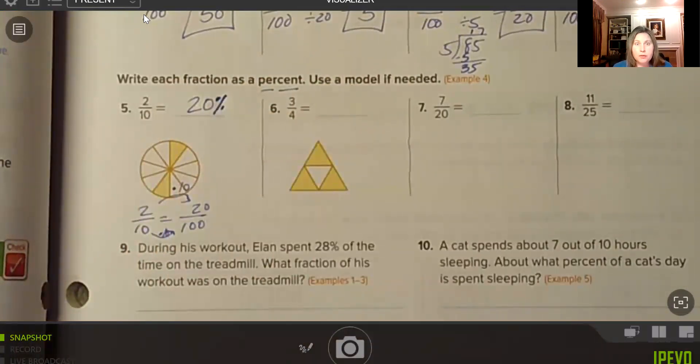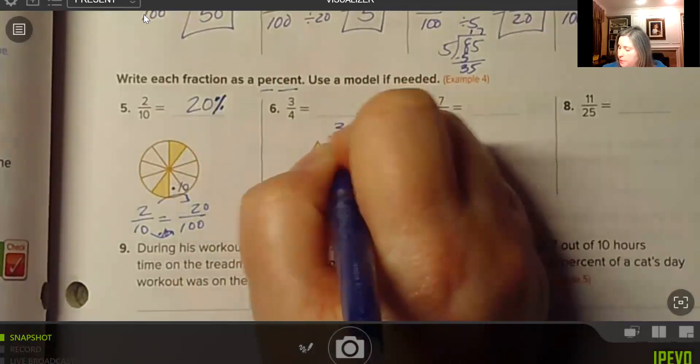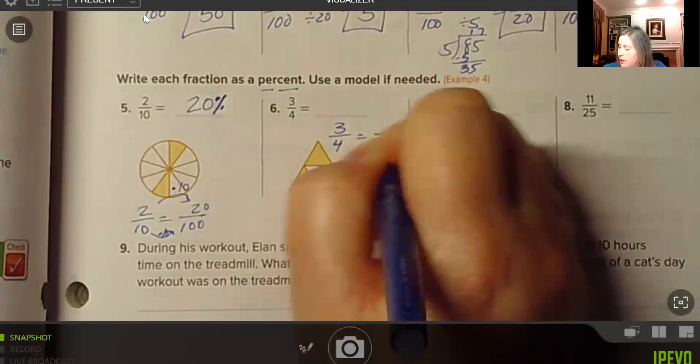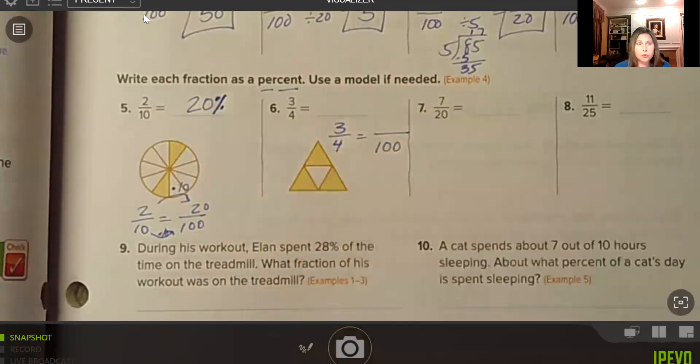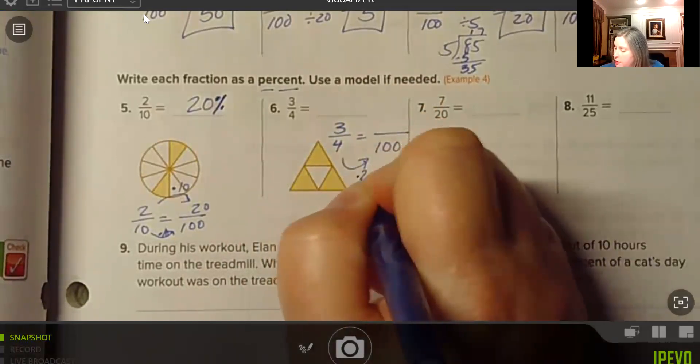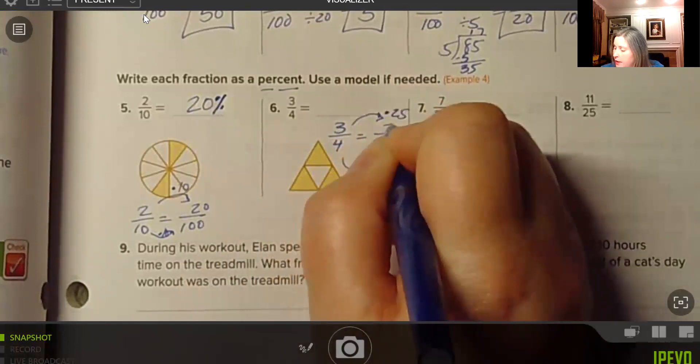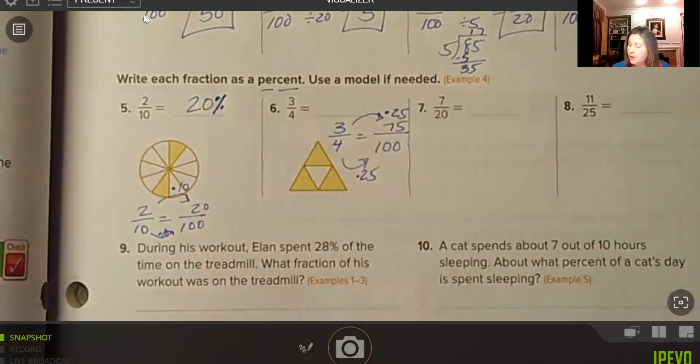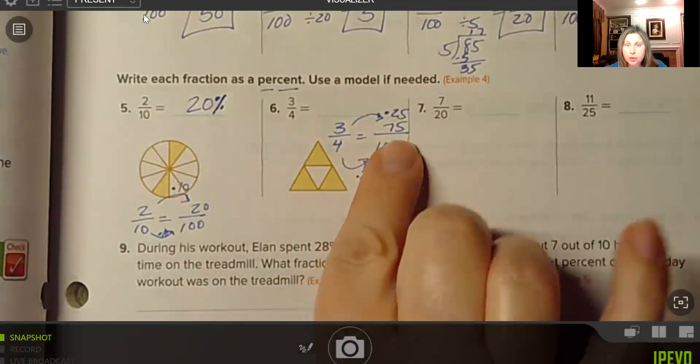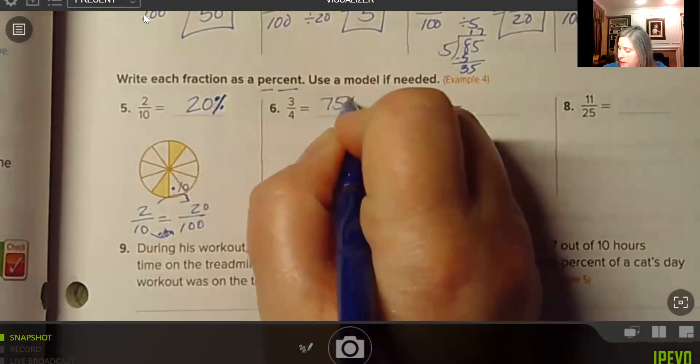Number 6, we have 3/4. So we want to scale that up to hundredths. 3 is to 4 as x is to 100. So to get from 4 to 100, we multiply by 25. We need to do the same thing to our numerator times 25. So 3 times 25 is 75. So we get 75 per hundred, which is 75 percent.